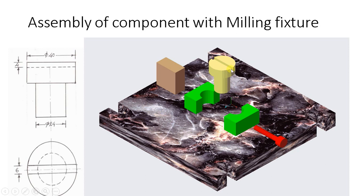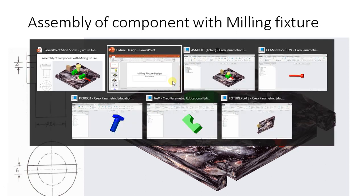To mill a slot in this component of depth 6 mm and 4 mm wide, we need to locate this component in the center of this fixture plate. This is the fixture plate, and we will load this component in the center with the help of two locators. We will clamp this component with the help of a clamping screw. We will set the milling cutter at the height of this setting block.